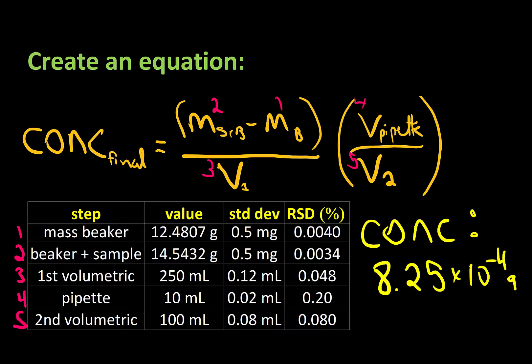So sparing you from the plug and chug, if we put all those numbers in we see that the final concentration of our diluted sample is 8.25 times 10 to the minus 4 grams per liter. But that's not enough.